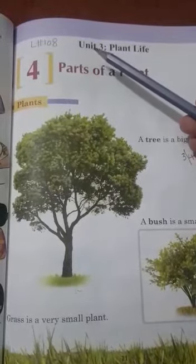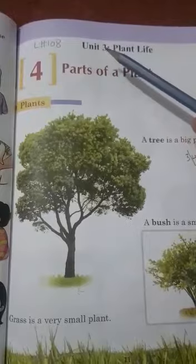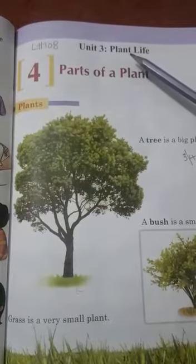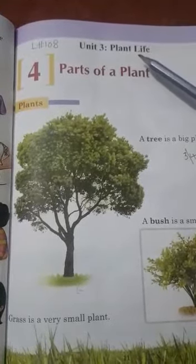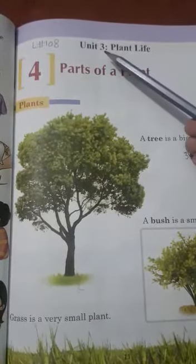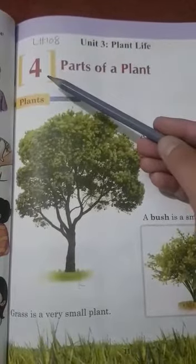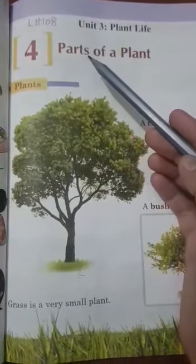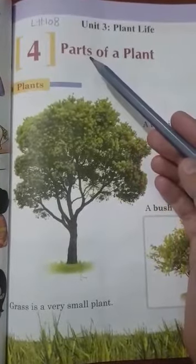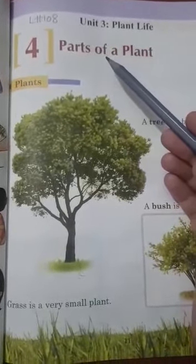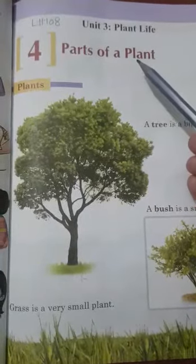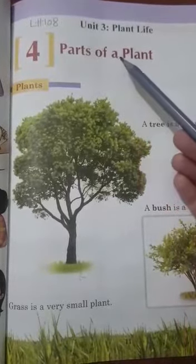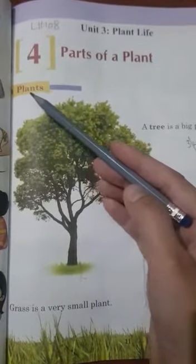Unit — U-N-I-T — unit. Plant — P-L-A-N-T — plant. Life — L-I-F-E — life. Unit 3 Plant Life. Chapter 4: Parts — P-A-R-T-S — parts. Of a plant — P-L-A-N-T — plant. Parts of a plant.